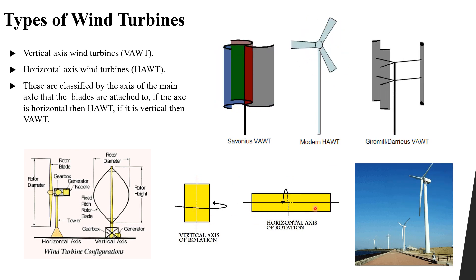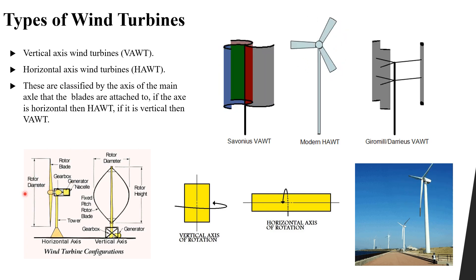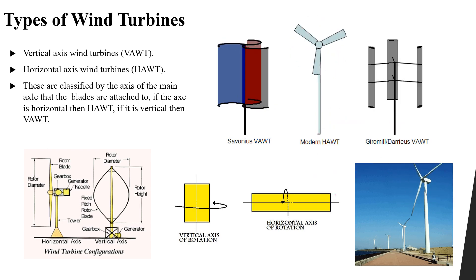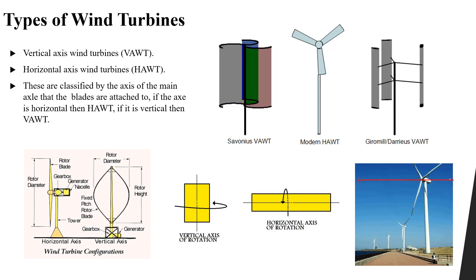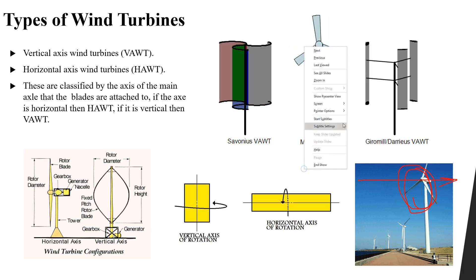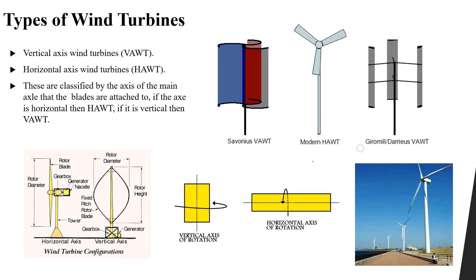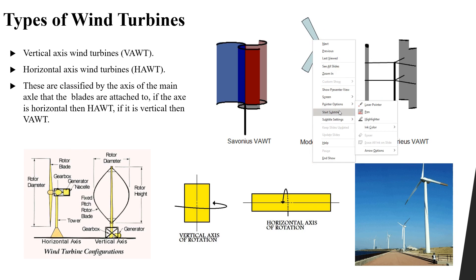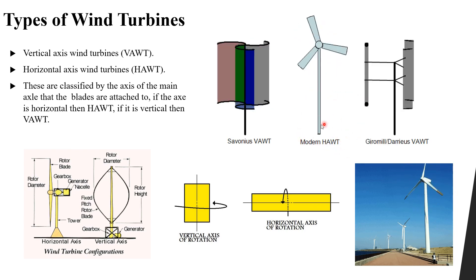Now if instead of a vertical axis we have a horizontal axis of rotation, our blades rotate around it. As you can see, the axis of rotation is horizontal and the blades are rotating around it — that is why this is called a horizontal axis wind turbine.